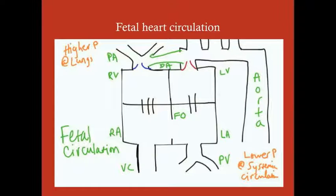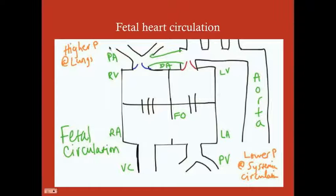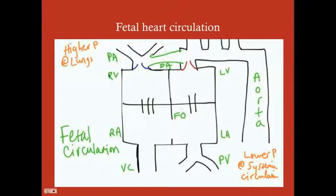This is the fetal heart circulation. One big difference is there's a normal opening called the foramen ovale — not yet an atrial septal defect — which allows blood to move from the right atrium to the left atrium. In the fetal heart, you have higher pressure in the lungs because the lungs aren't working; the baby is in amniotic fluid. We don't want blood going to the lungs since there's no oxygen there. The foramen ovale shunts blood from the right side to the left side, as does the ductus arteriosus — a passive process because you have higher pressure on the right than on the left.